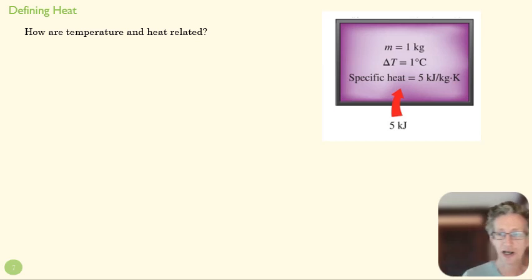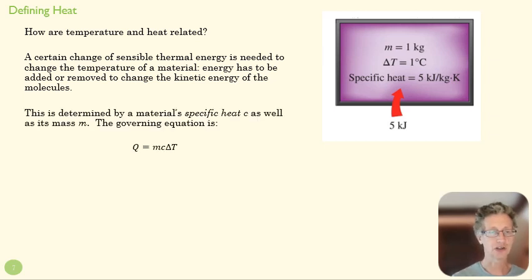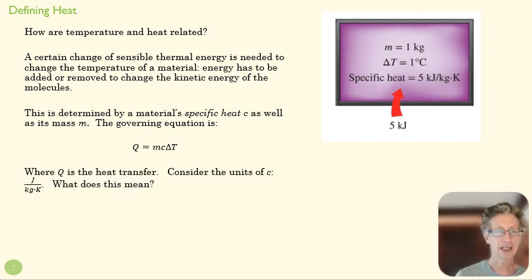We've talked about temperature and thermal energy or heat. Let's talk about how they're related. A change in sensible thermal energy is needed to change the temperature of a material, and the relationship between those two things is determined by the calorimetry equation, which we see right here. You probably recognize this from 211. C is our specific heat, m is our mass. This tells us that in order to change my temperature this much, I need to add this much energy. If I have a large mass...